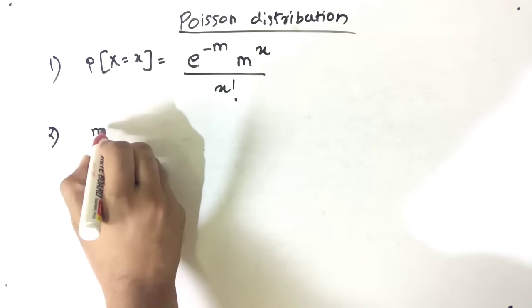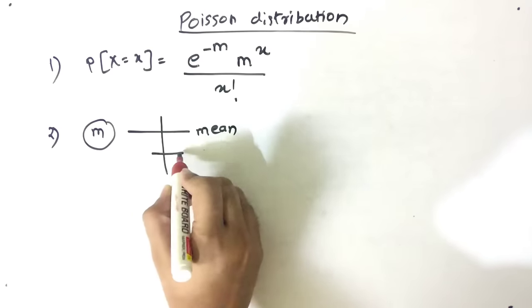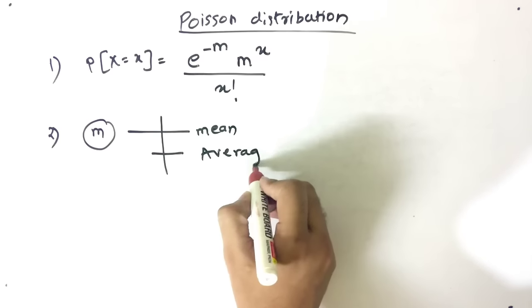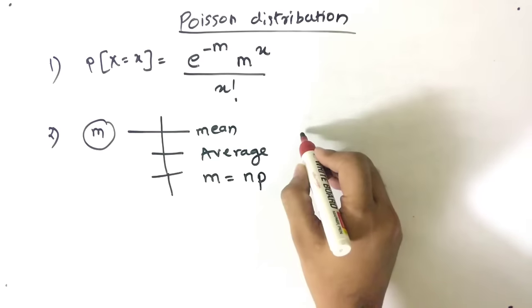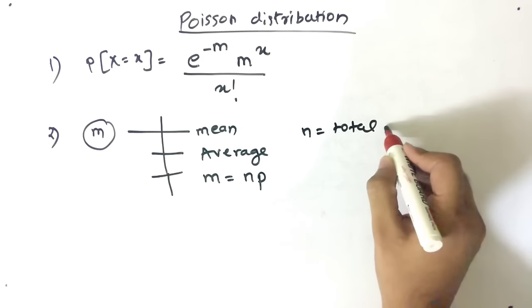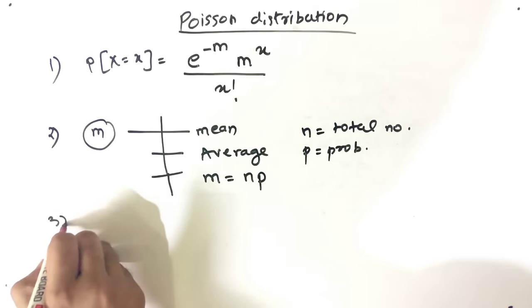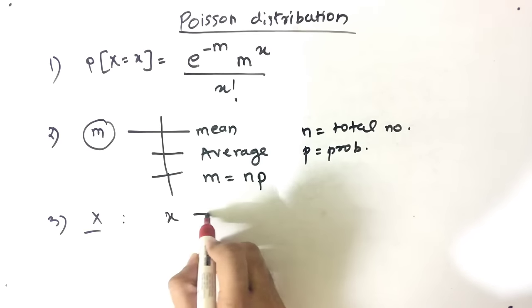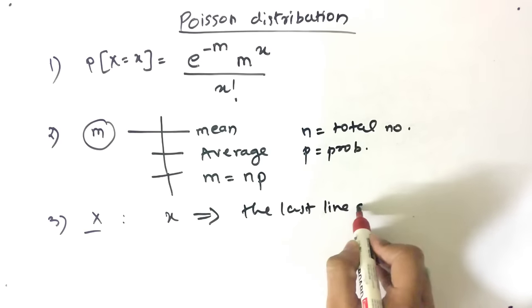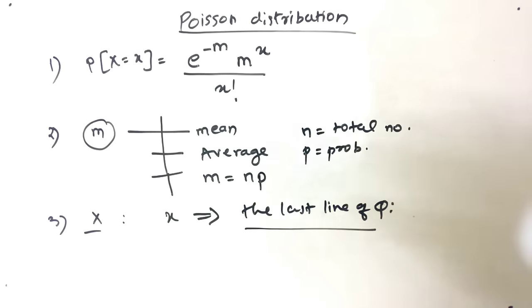m means it can be a mean, which is nothing but average. The very important point is m is equal to n into p, where n means the total number and p means the probability. x is the last line of the question, because that will be the condition — like 'find probability of something' — so x comes from the last line of the question.